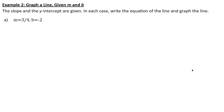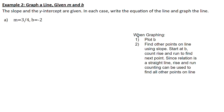Now we want to graph a line given our m and b value. The slope m is three quarters, so it's going to rise by 3 units and run by 4 units, with a y-intercept of negative 2. When graphing, we plot b first and then find all other points using the slope. We start at b and count rise over run to find the next point. Since the relation is a straight line, rise and run counting can be used to find all other points.